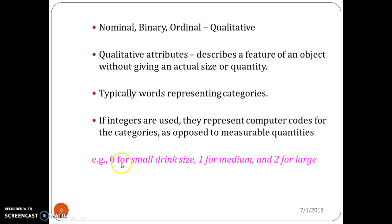But you cannot say what the actual size or quantity of small, medium, and large is. You can have numerical representations, but not the exact values for small, medium, and large. Since you do not have the option of expressing the actual size or quantity, nominal, binary, and ordinal attributes are called qualitative attributes.